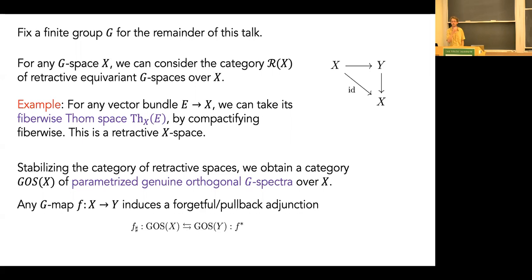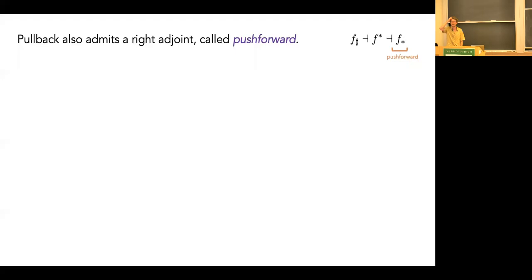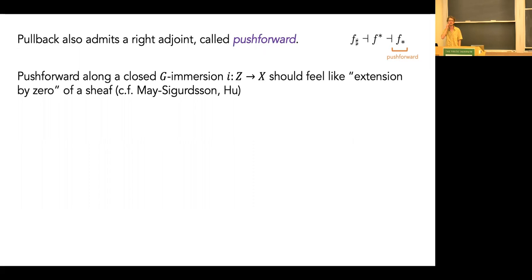Given a map from X to Y, I can push forward along it — forgetting along the structure map — getting a map called lower-sharp. I can also pull back along f, which is right adjoint to lower-sharp. Pullback also admits a right adjoint, called push-forward; it is incredibly weirdly behaved. May–Sigurdsson indicate this should feel like extension by zero in a sheafy context, but it's not well-understood in many settings.